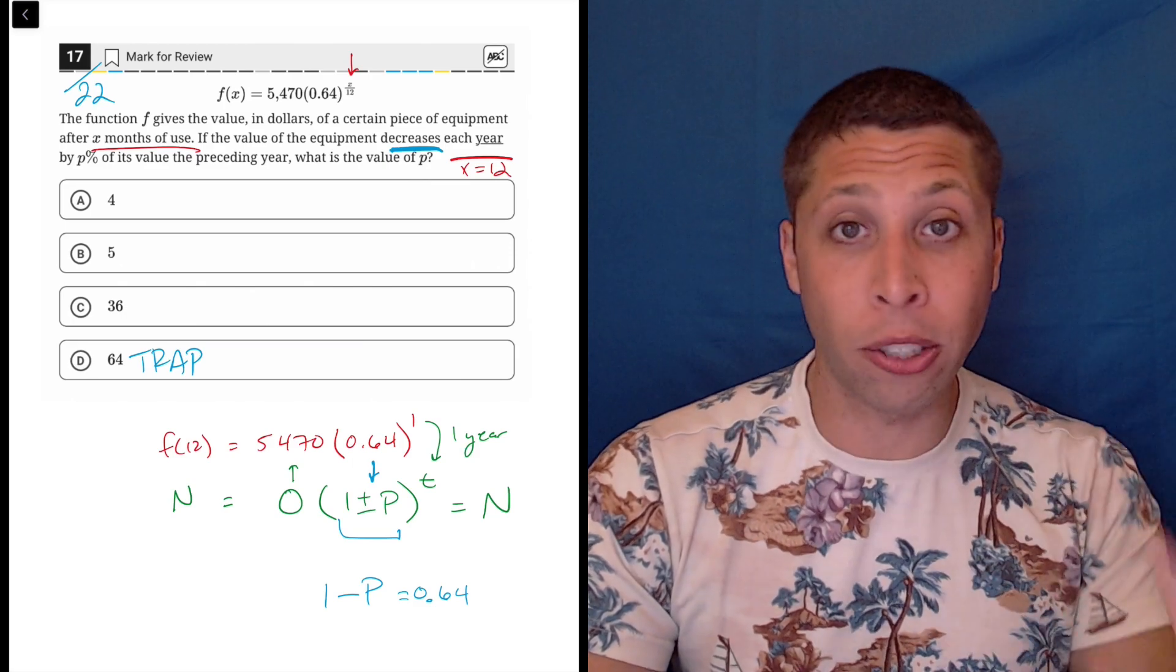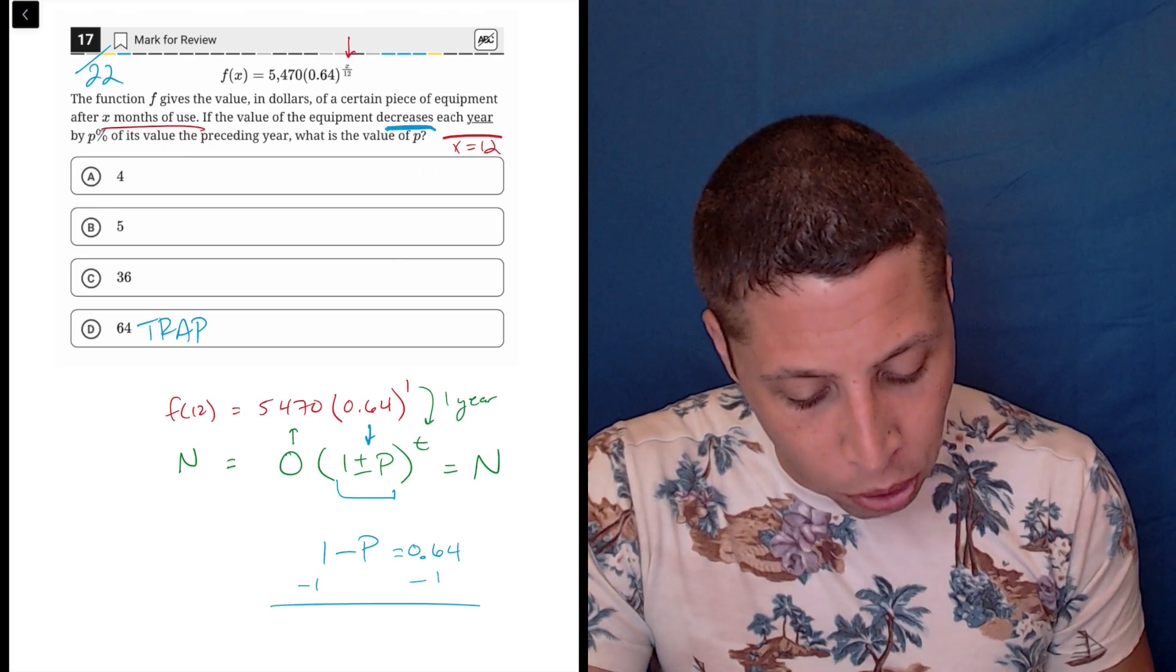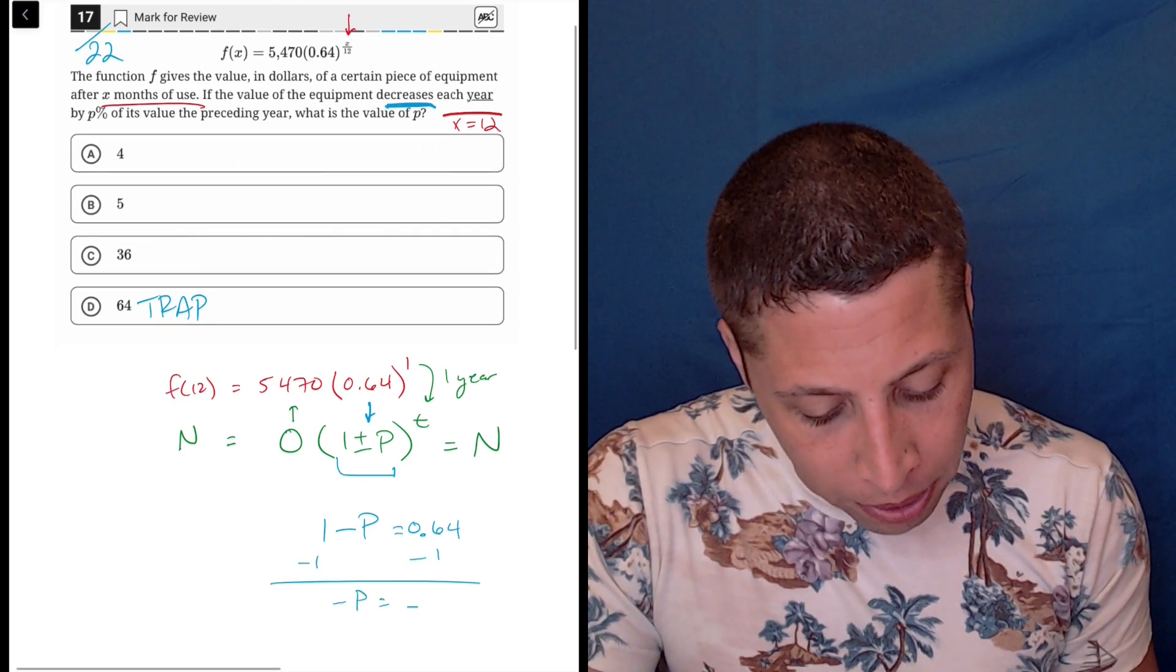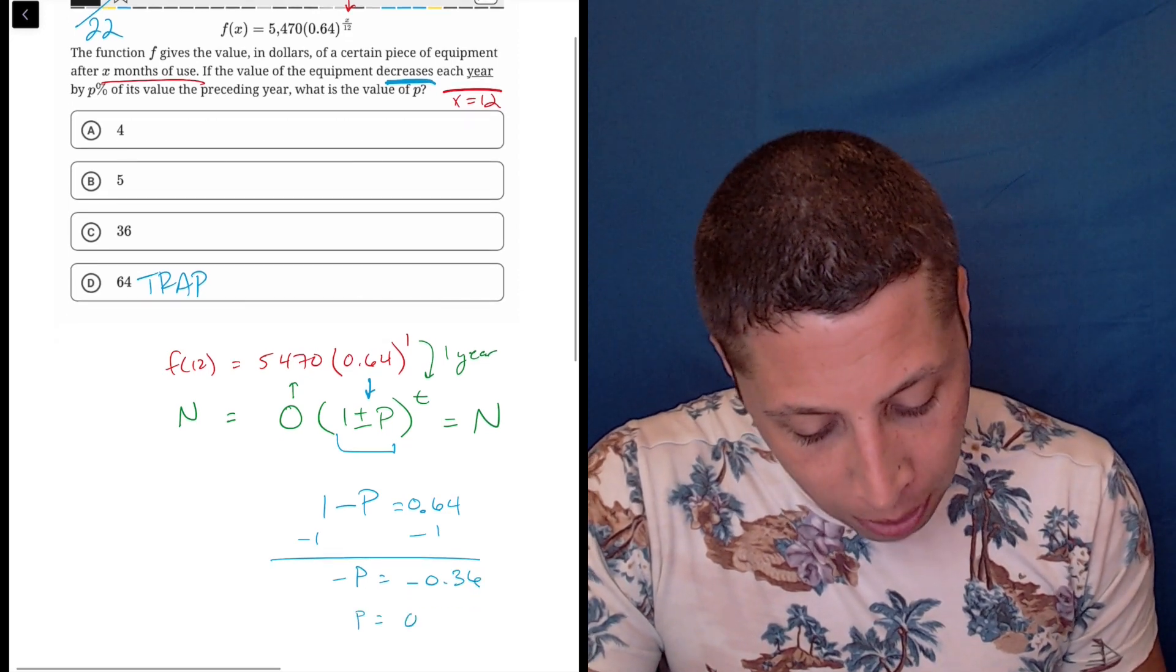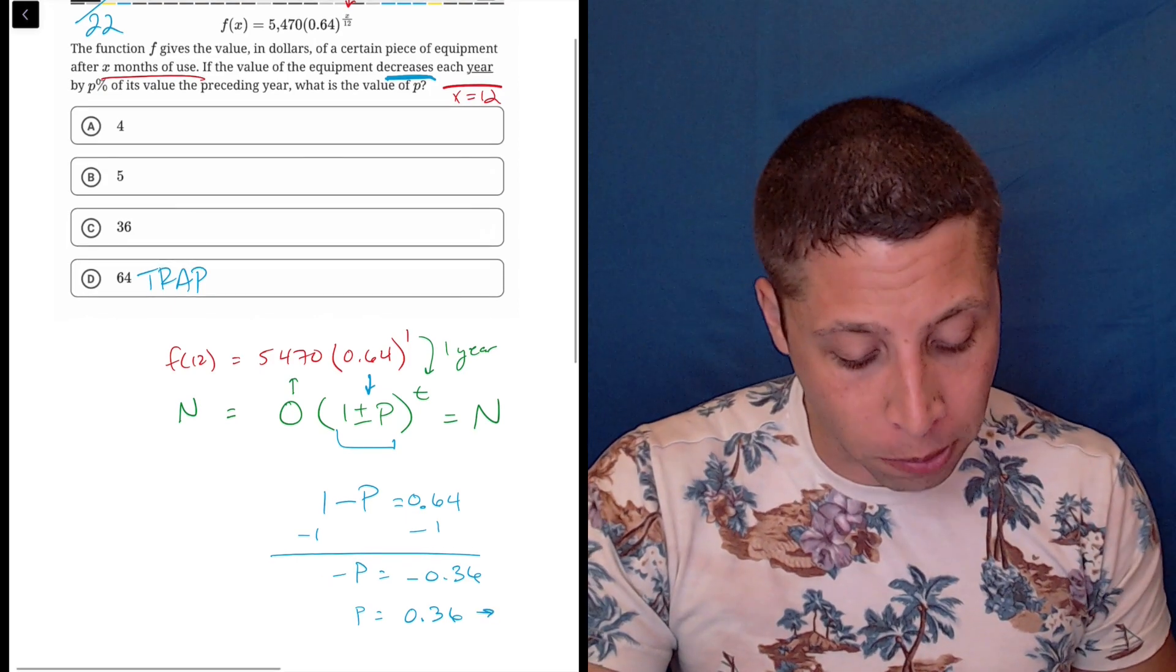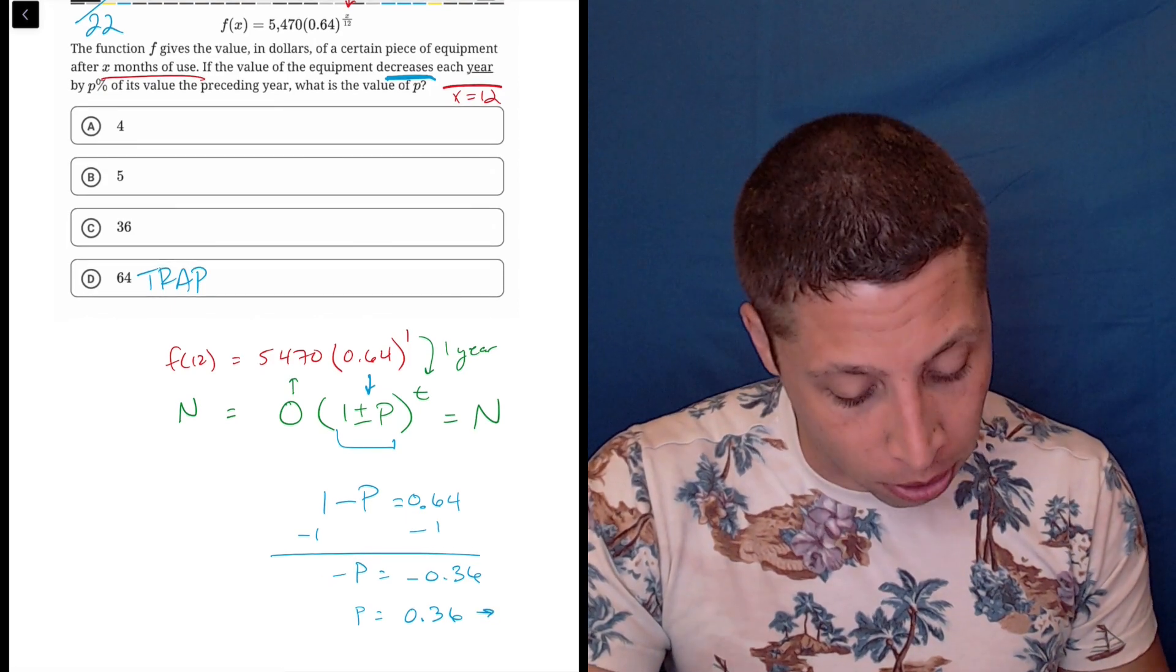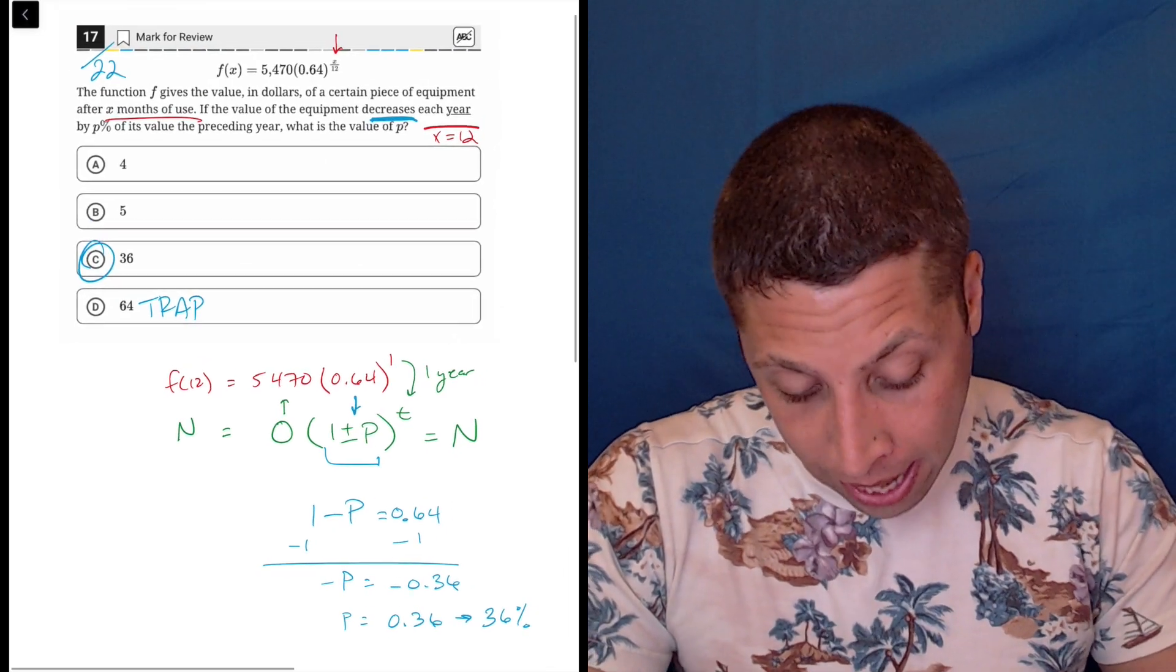All we need to do here is solve for P. So we'd subtract one, and we'd get -P is equal to -0.36, drop those negatives, and we get P is 0.36, which whenever we have this open formula, the percentage is written as a decimal. So that is actually 36%. Choice C. And that's the answer.